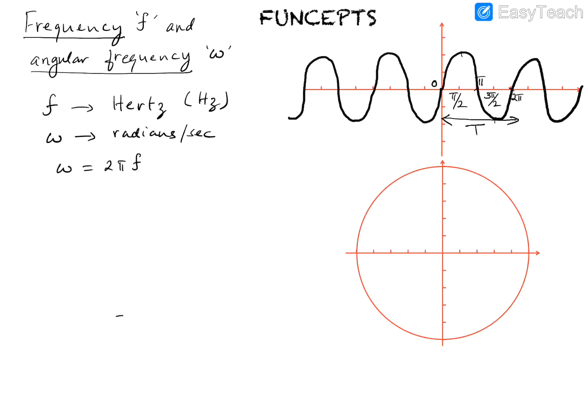If the sinusoidal waveform takes one second to complete one cycle, then the frequency of this sinusoid is one Hertz. So one Hertz corresponds to one cycle per second.